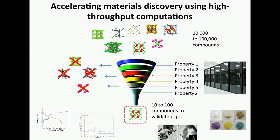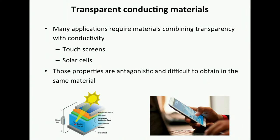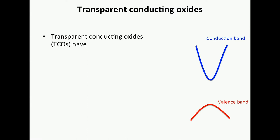You guys know all about high-throughput computing now. The specific example where we apply this technique is transparent conducting oxides. You actually have a transparent and conducting material in your pocket if you have a smartphone — there's a touchscreen. The touchscreen is a transparent conducting material. This is an interesting problem for the material scientist because usually transparent materials are not very conductive, and vice versa. There are ways to make transparent conducting material; this has been known for decades.